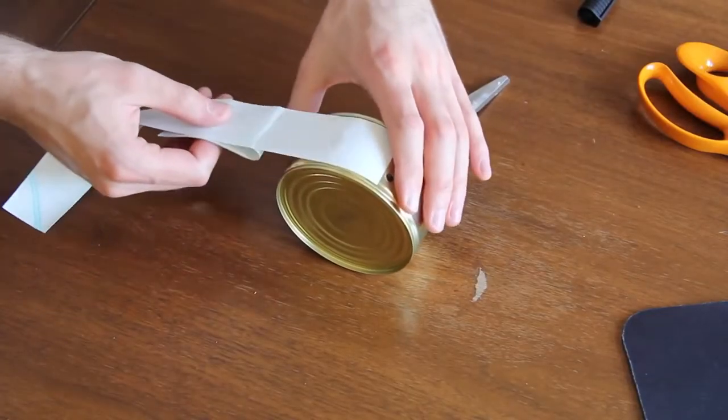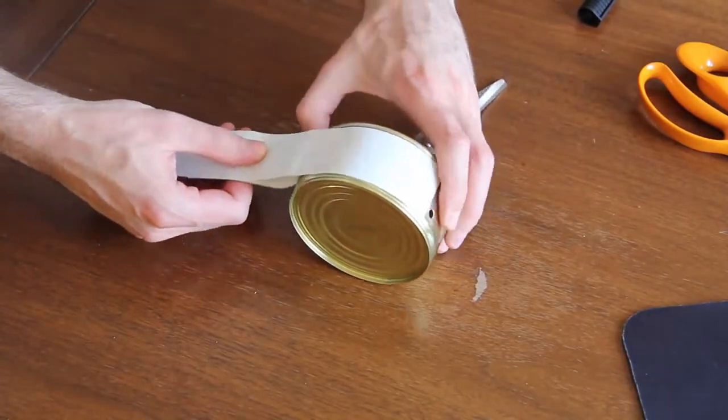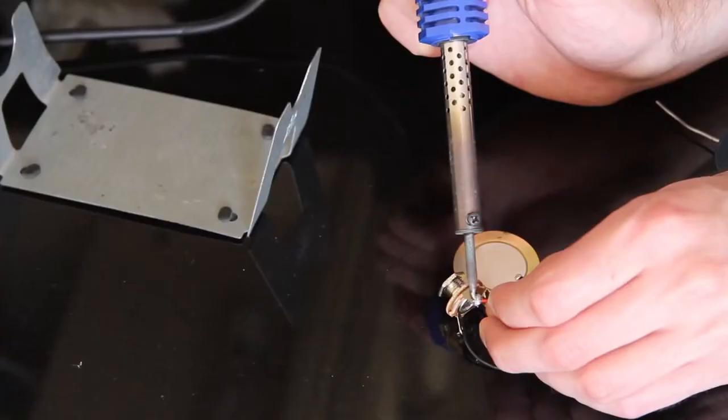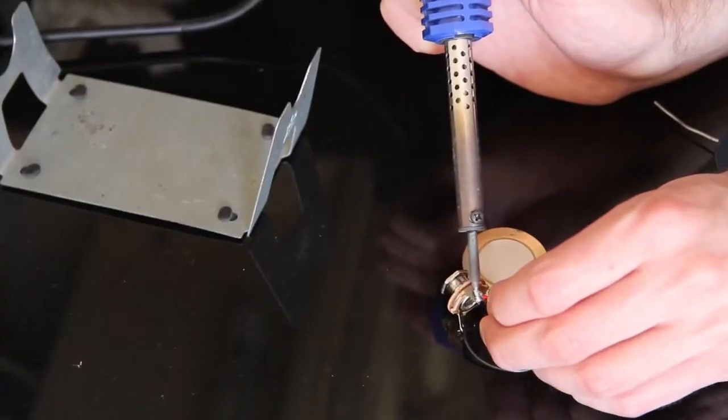Attach the foil if you want to have the look of a small drum. Connect the cables with the trigger through soldering.